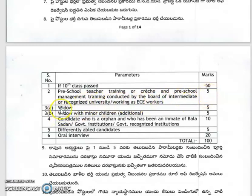You will have 5 marks for widow with minor children. And candidates who are orphan will receive 10 marks.